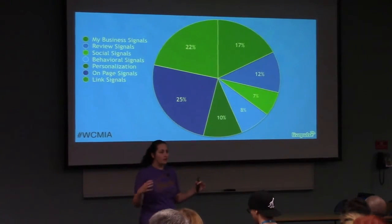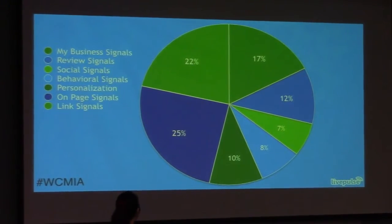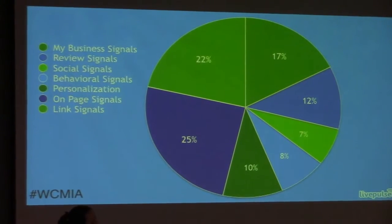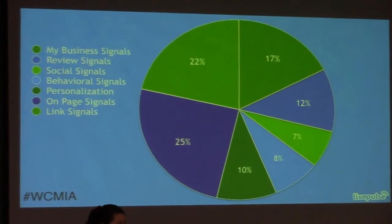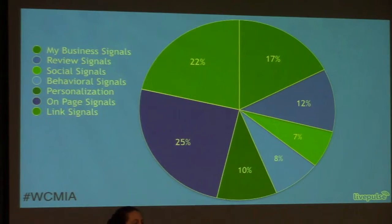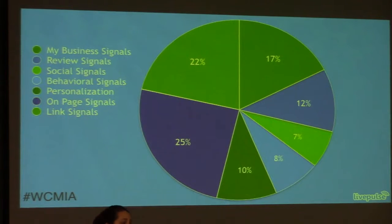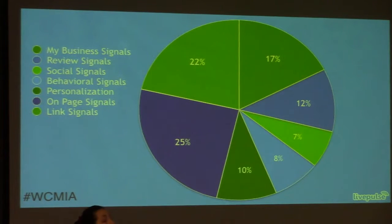Here is how SEO as a whole for local businesses is comprised. On-page signals actually make up 25% — but that's only a quarter of how you're found online. Links make up another 22%. Everything else is local based. Looking at the actual pie graph, you can see that over 50% of your traffic is going to come from something locally based. That is why, yes, you have to have that base on your website of regular standard SEO. But if you have a physical location, you have to do local SEO. You don't have a choice — you will fail if you don't.